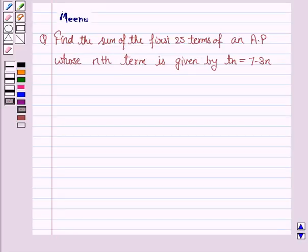Hello and welcome to the session. Let's work out the following problem. It says find the sum of the first 25 terms of an AP whose nth term is given by Tn equals 7 minus 3n.